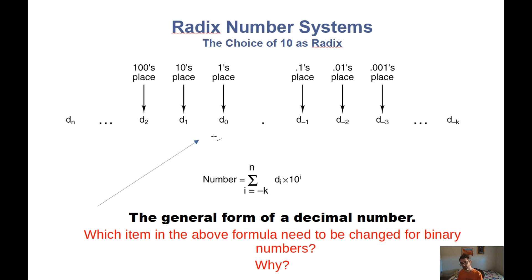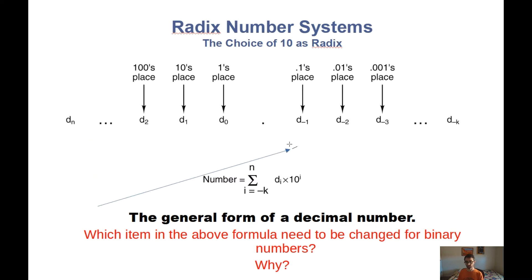Smaller values are to the right, larger values are to the left. So if we go to the right of the decimal place and there's a 5 over here, that only contributes 0.5 — a half, five tenths — to the value of the number.